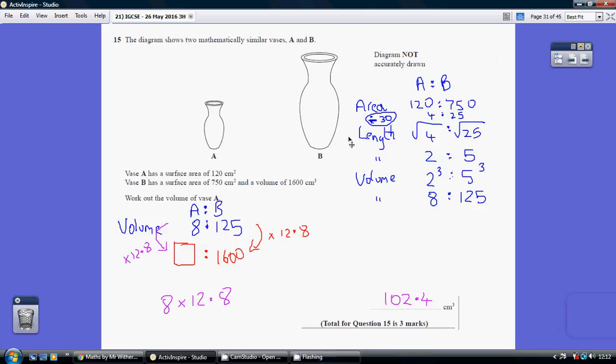So, start off with what we know. We know the area ratio is 120 to 750, A to B. Now, dividing through by 30, that simplifies the area ratio to 4 to 25.